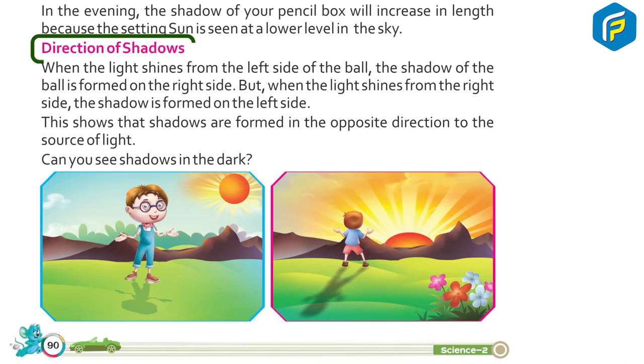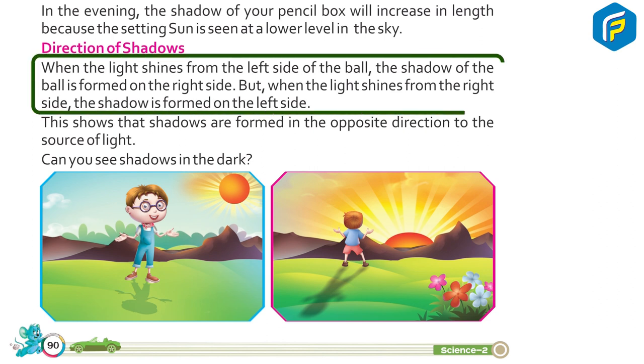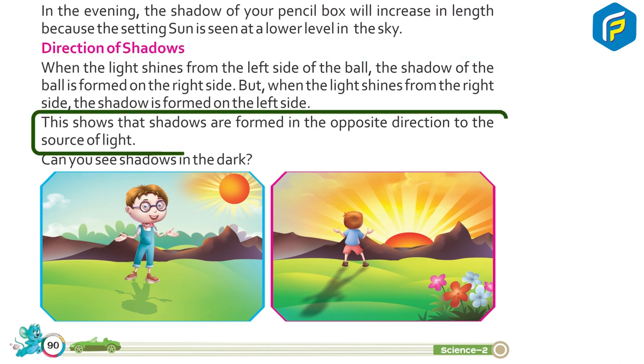Direction of shadow. When the light shines from the left side of the ball, the shadow of the ball is formed on the right side. But when the light shines from the right side, the shadow is formed on the left side. This shows that shadows are formed in the opposite direction to the source of light. Can you see shadows in the dark?